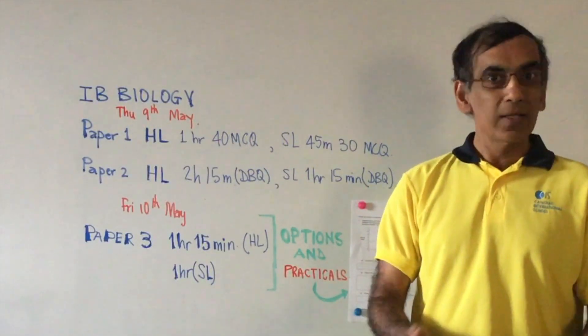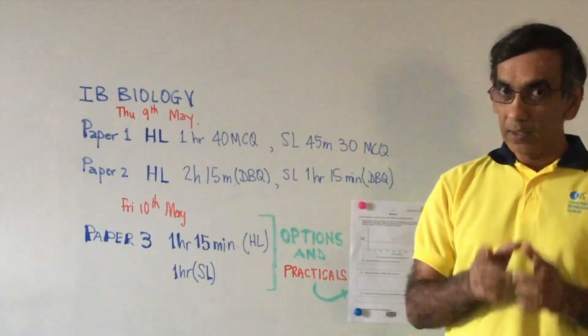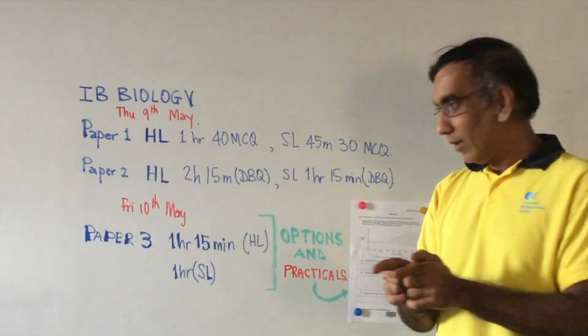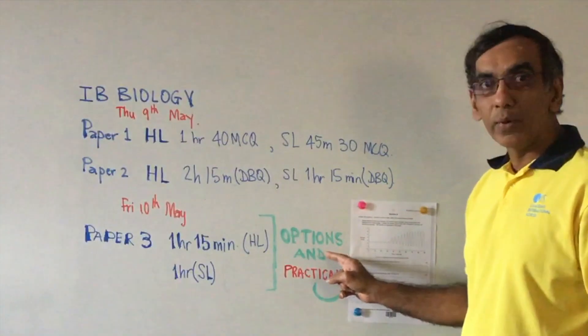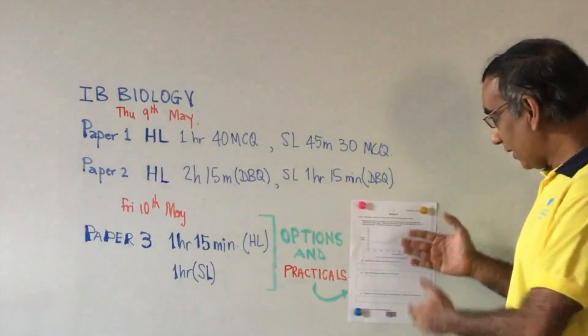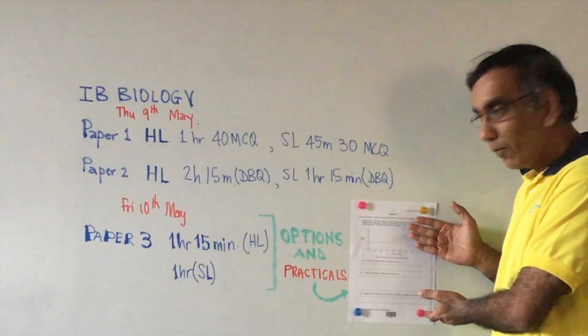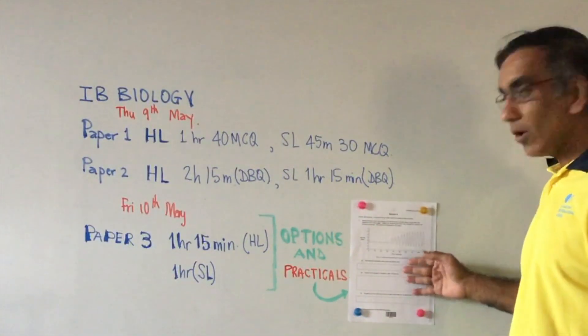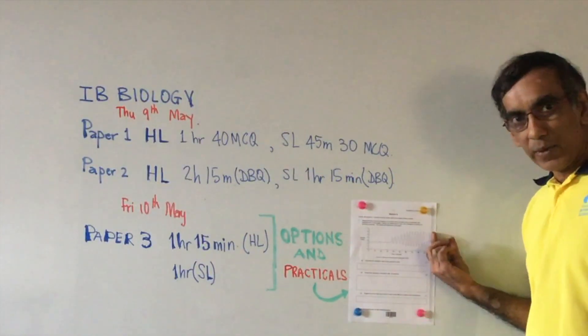In addition, the HL topics tend to be the more difficult ones. But as you prepare for Paper 3, it's very important not to forget about the all-important Section A, which is based on the practicals. Like here in this sample from the November 2018 exam, where question 1 is based on the respirometer prescribed practical.